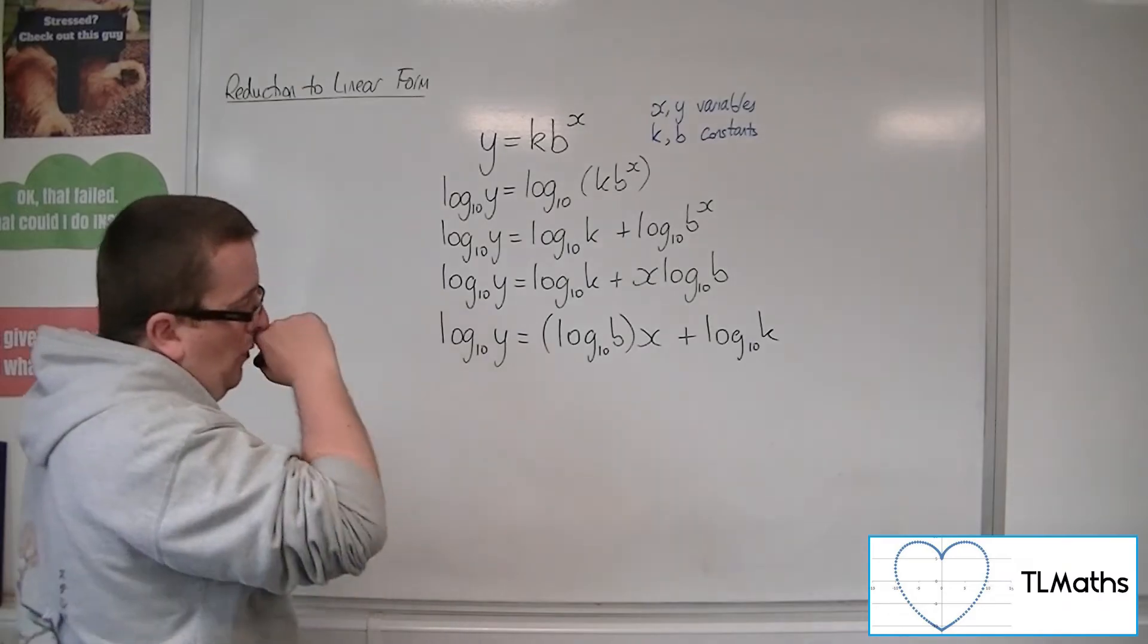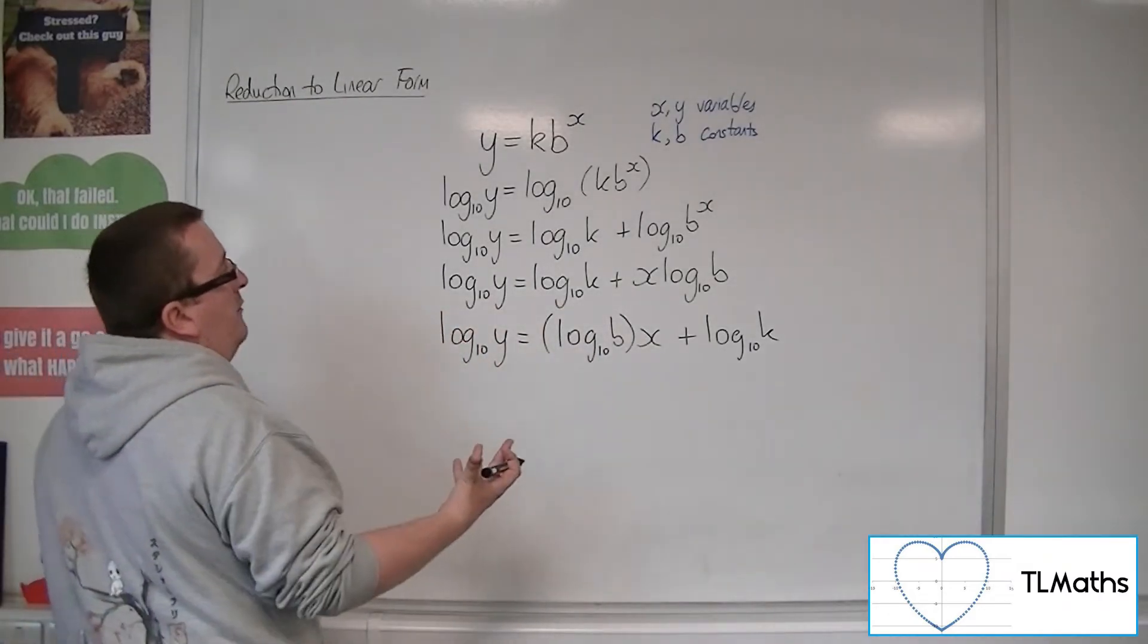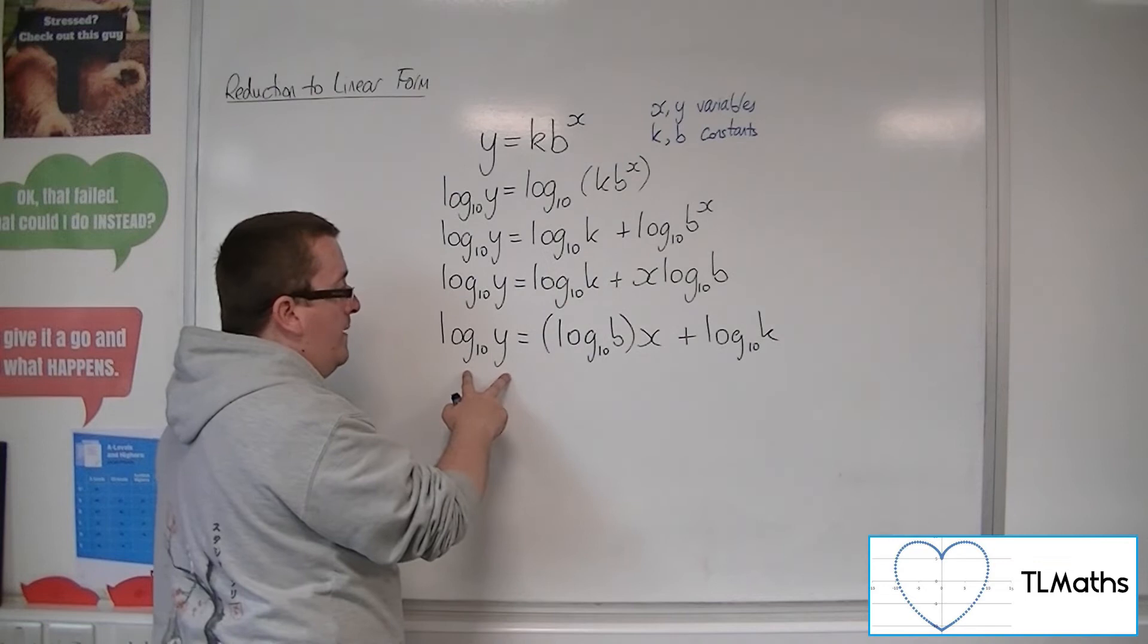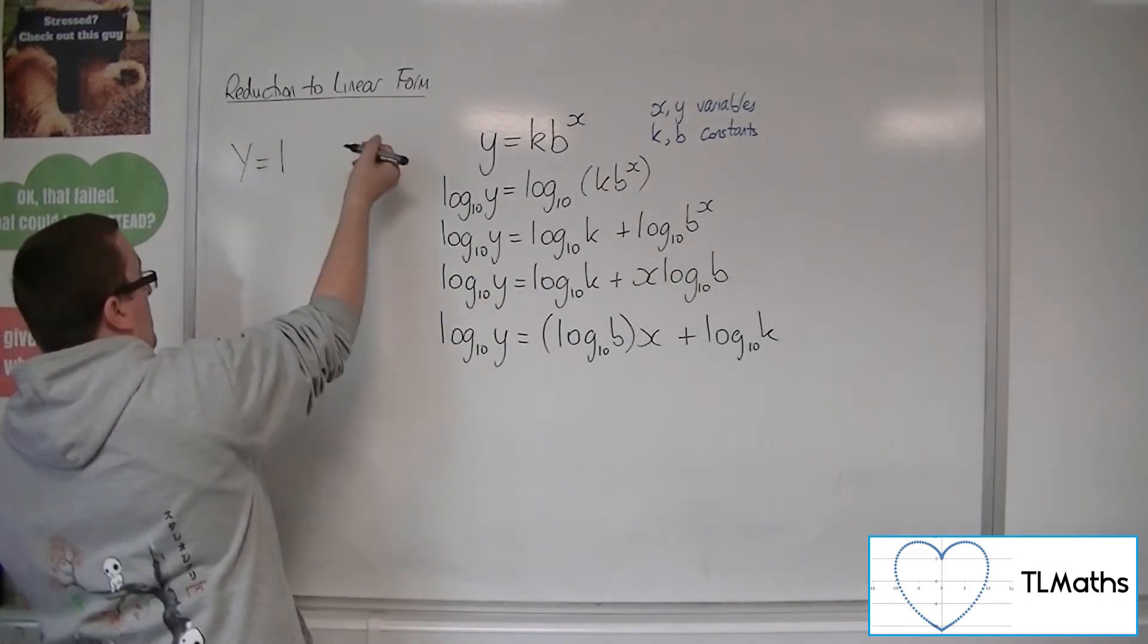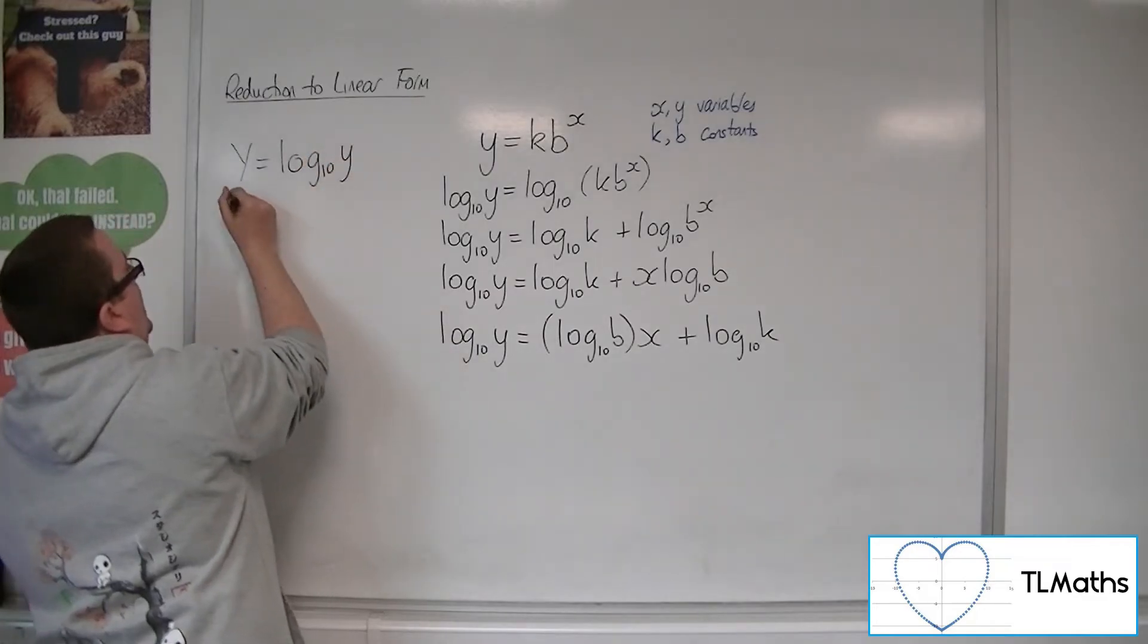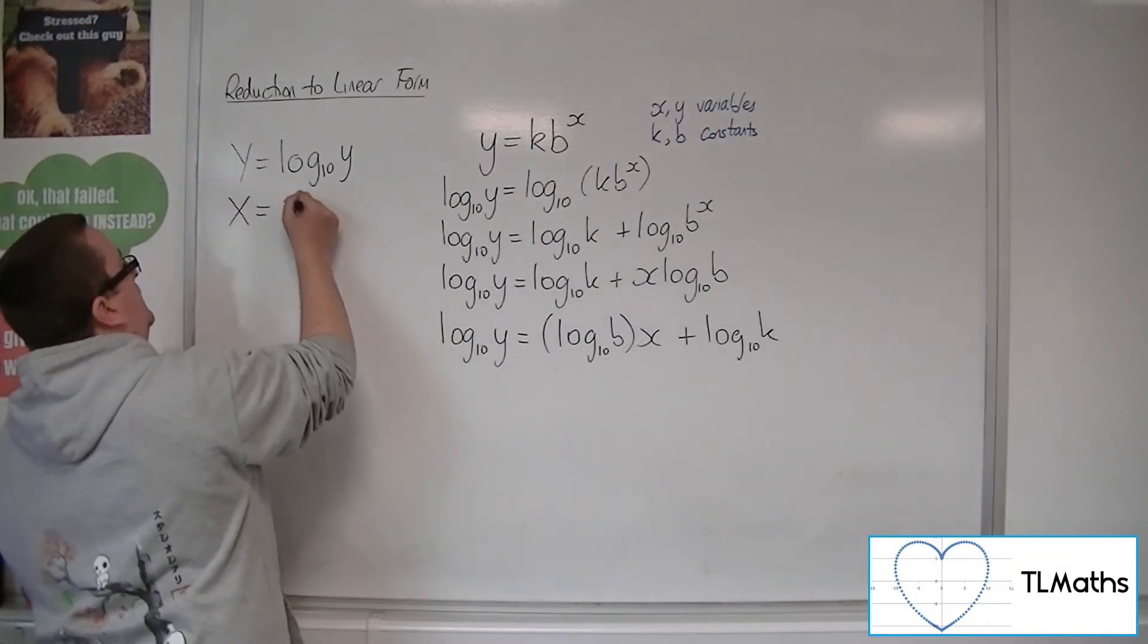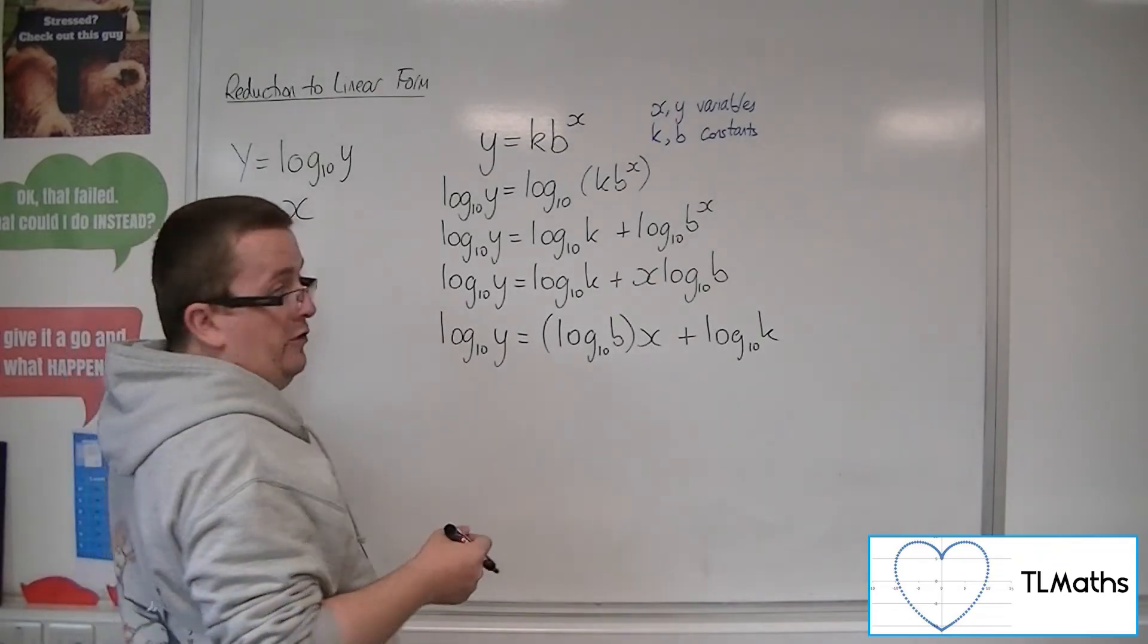So we've now got it of a form where you can say, well, if x and y are variables, then here's the variable x. This must also be a variable, log 10y. So we could say, let capital Y be log 10 of y and let capital X be just x. So that's just a straight swap there.